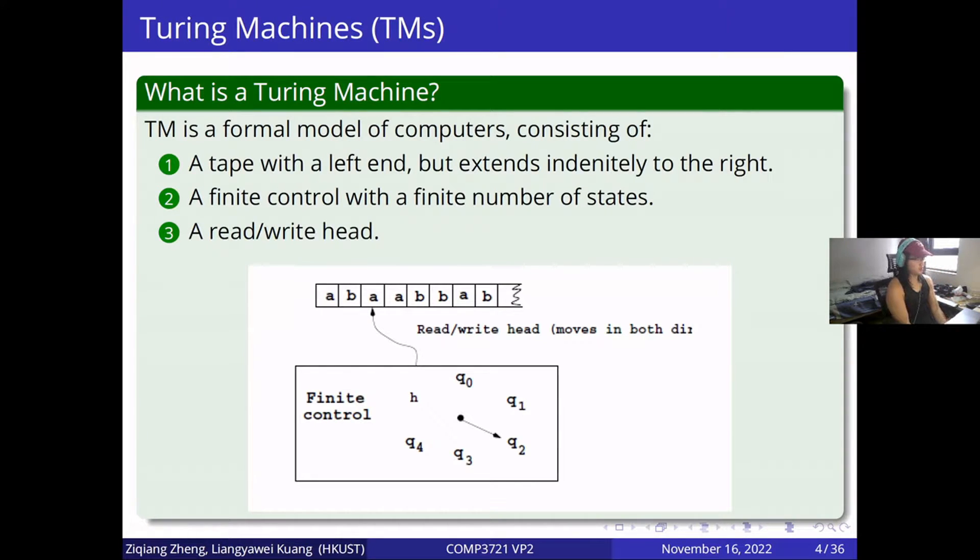The next question is what is Turing machine? Turing machine is a formal model of computers, consisting of a tape with a left end, and extend indefinitely to the right, a finite control with a finite number of states, and a read-write head.